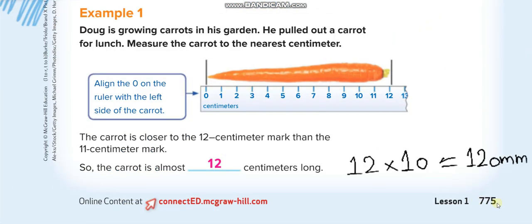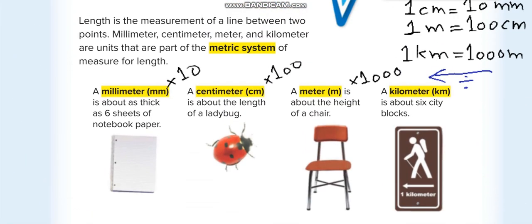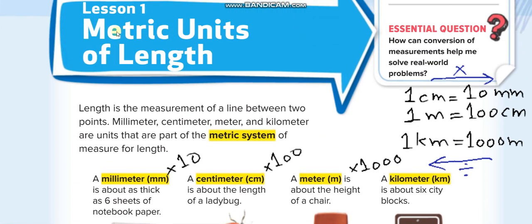In this lesson we will talk about length. Length means how long something is. There are customary units, which include feet and inches, and there are metric units, which include meters, kilometers, centimeters, millimeters, and also decimeters. Millimeter, centimeter, meter, and kilometer are units that are part of the metric system of measure for length.